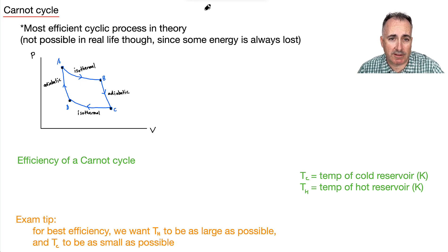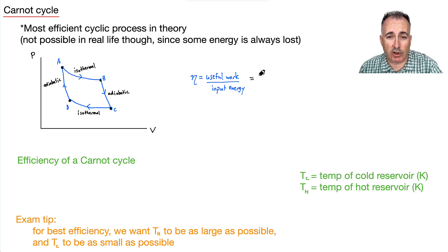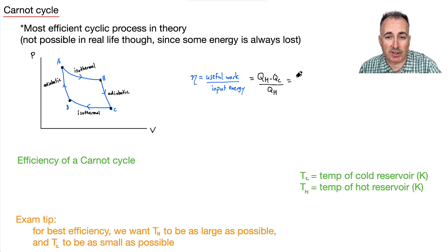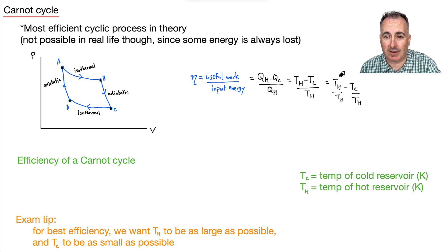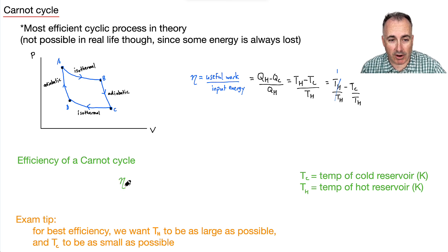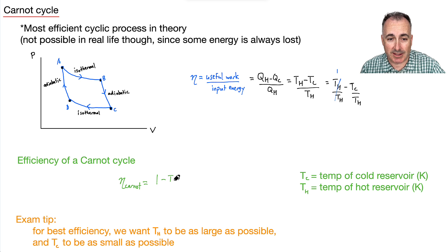Let's remember the efficiency equation for any heat engine: useful work divided by input. I prefer the version with heat: QH minus QC divided by QH. There's also a version with temperatures: TH minus TC over TH. Expanding that, it's TH over TH minus TC over TH — and TH over TH cancels to one. So we end up with the proper equation for the efficiency of a Carnot cycle.